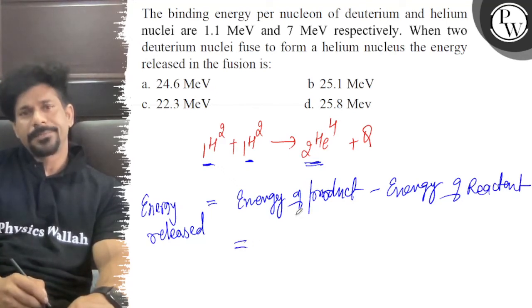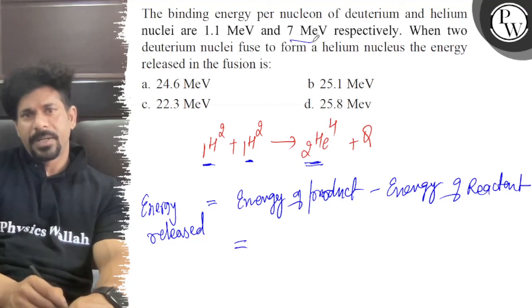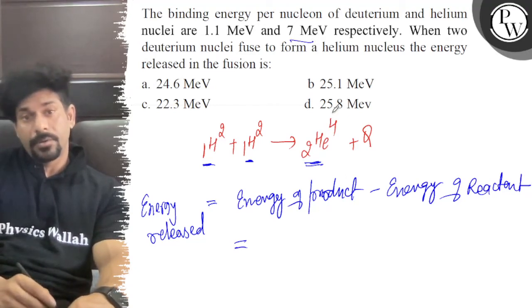Energy of product is given by here. That is your helium, 7 MeV each, and 4 nucleons are there.